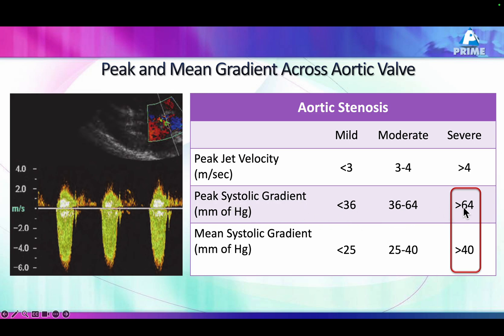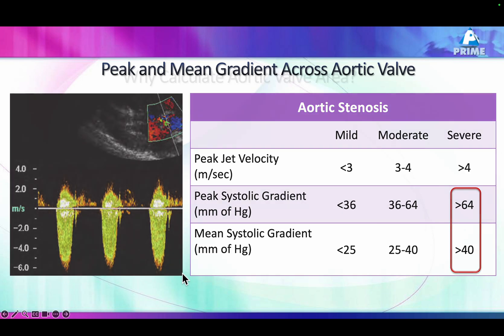A peak gradient of more than 60 mmHg and a mean gradient of more than 40 mmHg indicates severe aortic stenosis. So this CW Doppler tracing is of severe aortic stenosis.